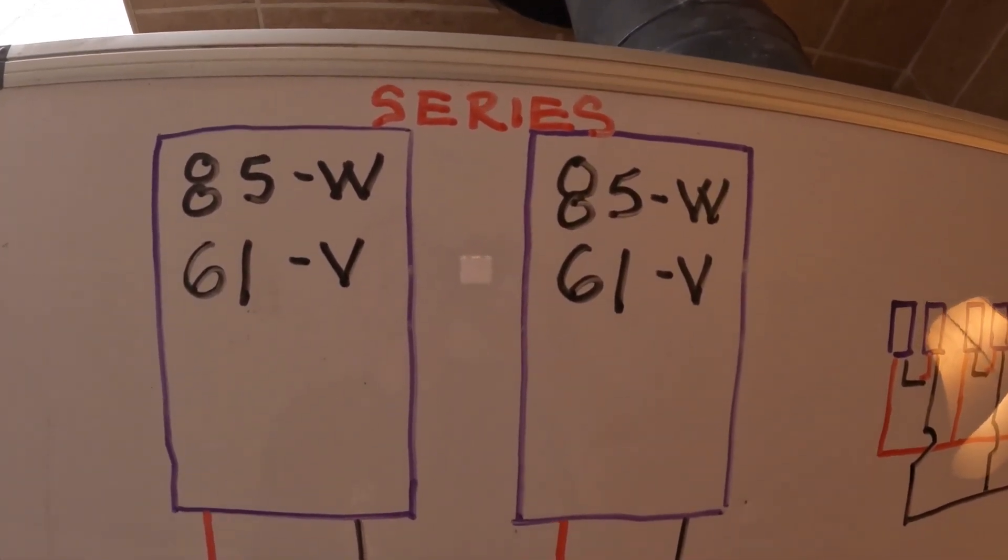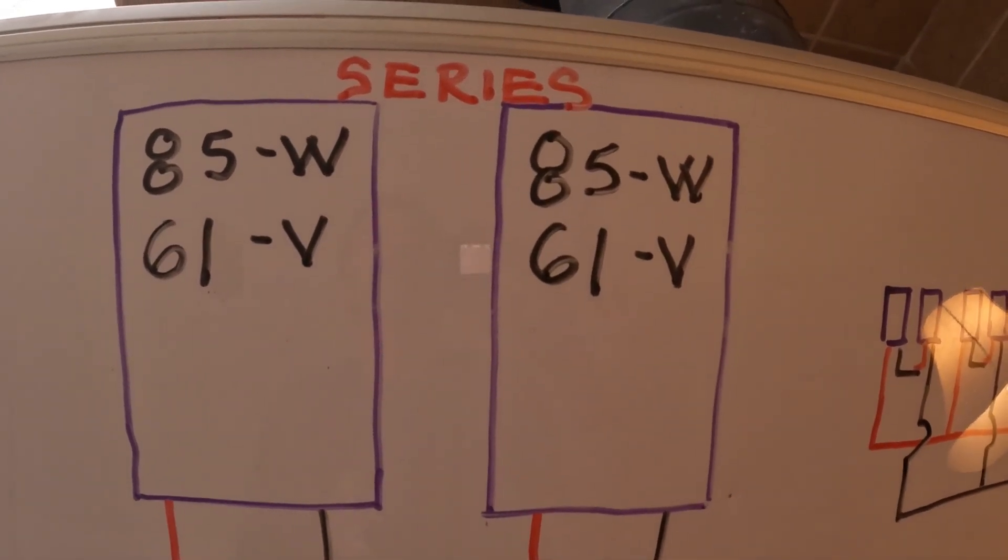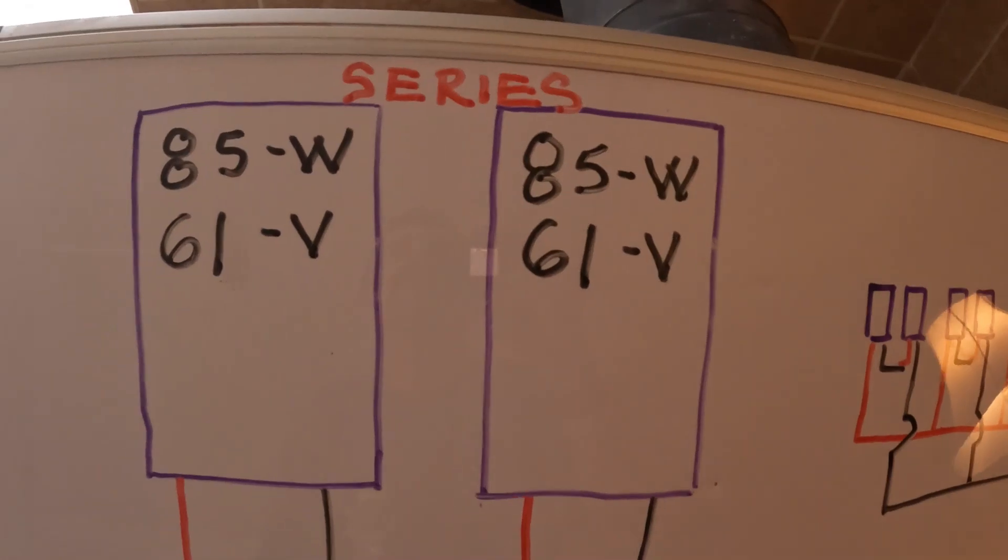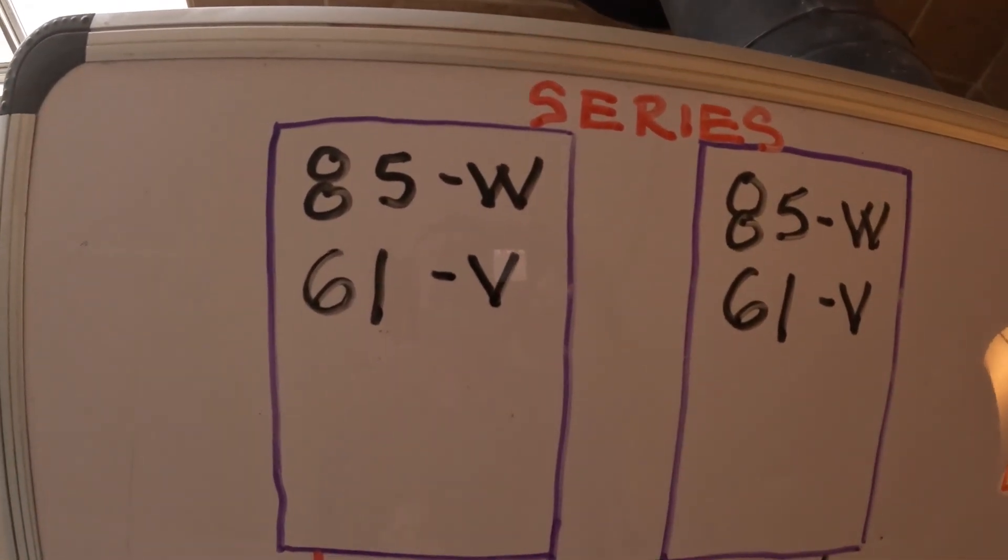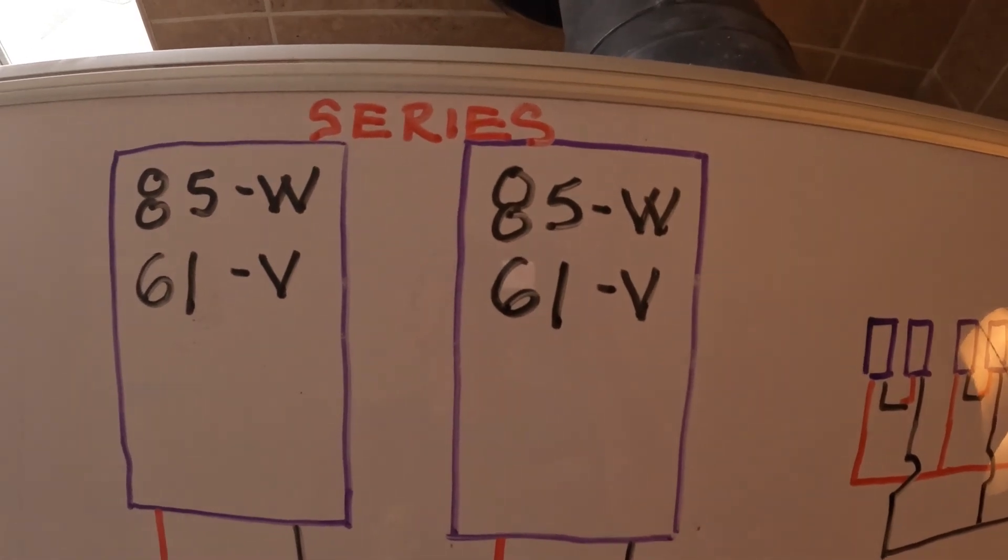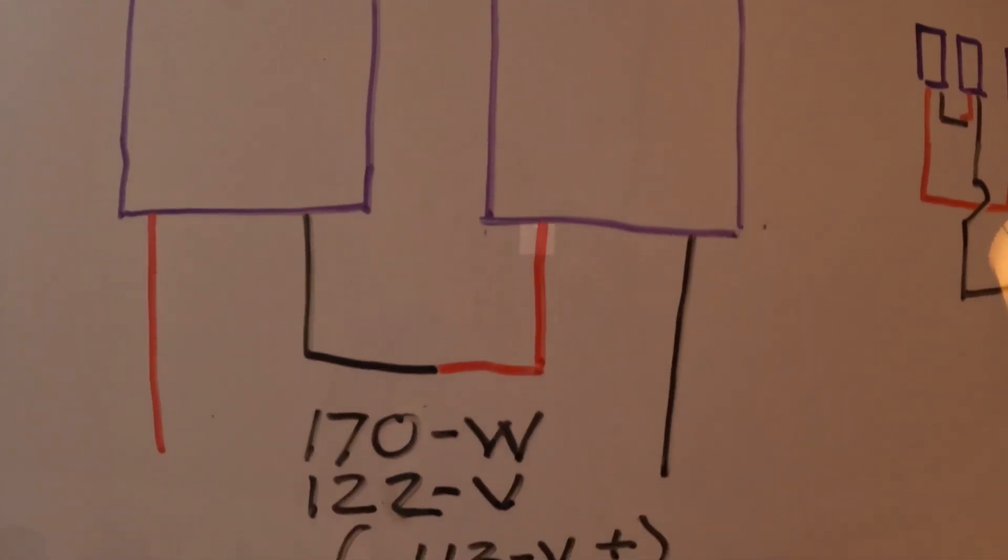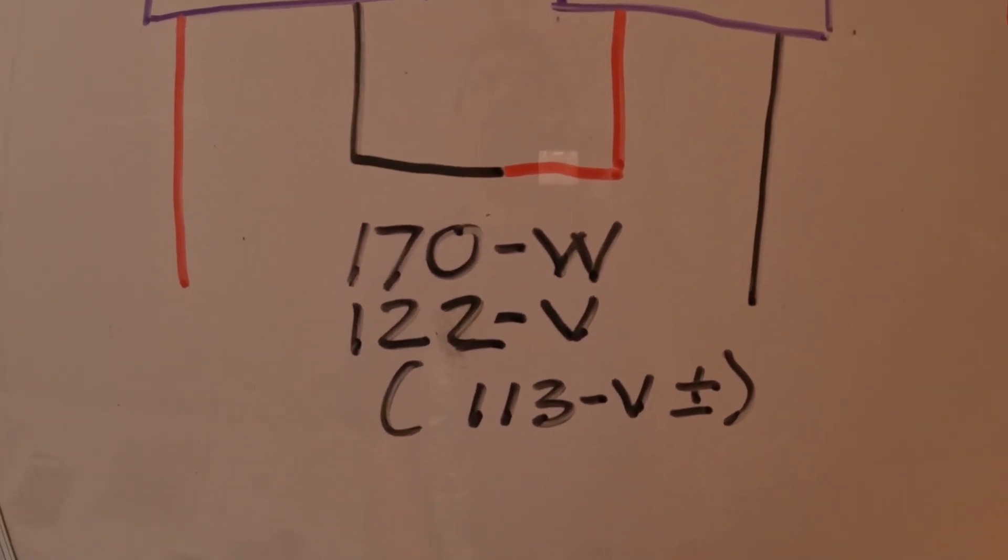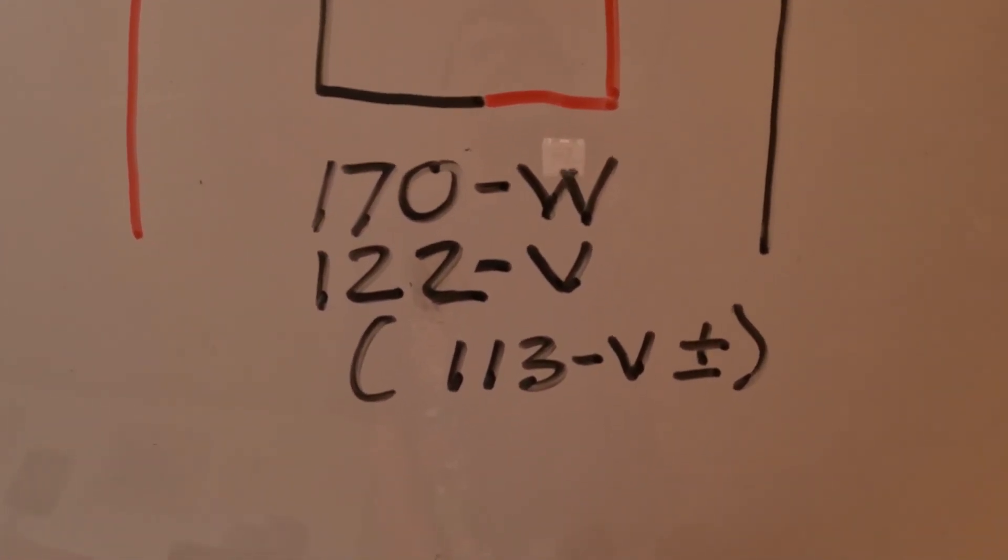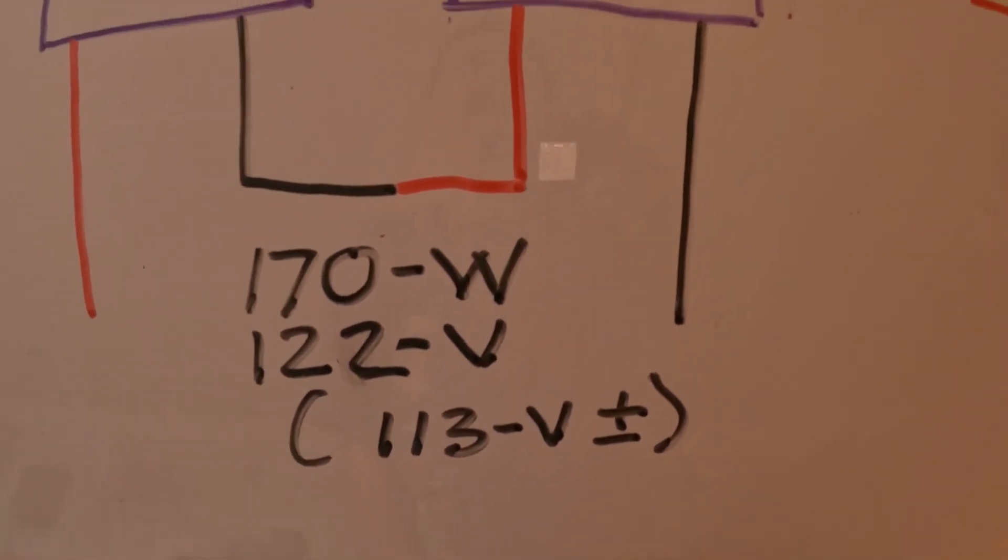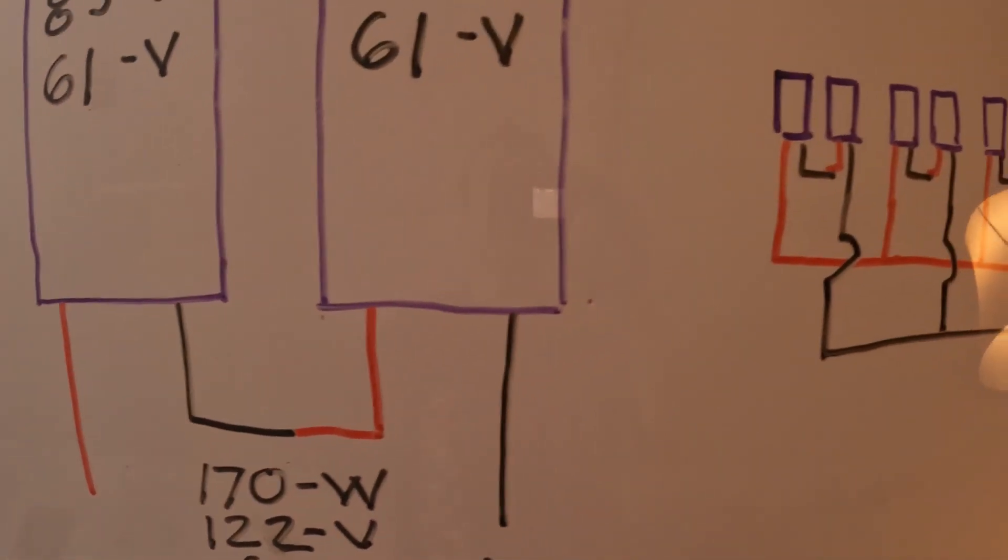I have these 61 volt panels that I purchased on Craigslist for about 40 cents a watt. Each one is 85 watts, 61 volts. I tie two of those in series to create 170 watts, 122 volts in theory, but I'm reading approximately 113 volts at the panel bus bar.